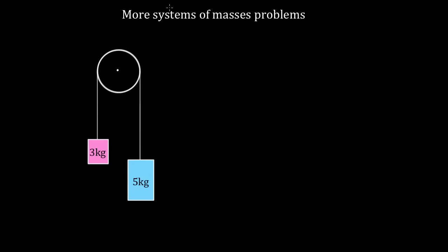Let's solve some more of these systems problems. There's a hard way to do this and an easy way to do this. The hard way is to solve Newton's second law for each box individually and then combine them, giving you two equations with two unknowns. You try your best to solve the algebra without losing any signs, but it usually goes wrong.